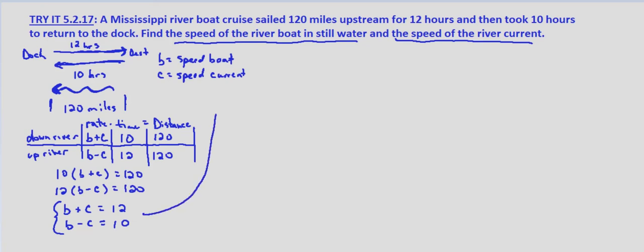I'm going to go ahead and rewrite this up here without the bracket on the left hand side. B plus c equals 12 and b minus c equals 10. Now when we check I'll use these first two equations we found, rate times time equals distance. But to solve I'm going to use this system.